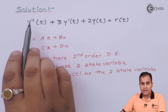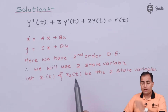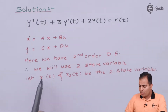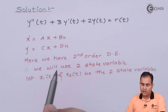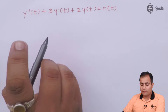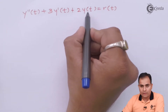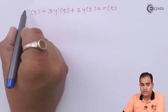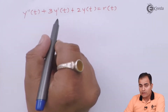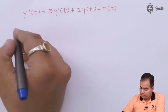The highest degree of the differential equation is 2, so we will use two state variables — let's call them x1 and x2. We substitute these state variables into y(t) because the highest degree is 2, and we want to express the whole equation in terms of state variables. So we replace y(t) with x1(t).